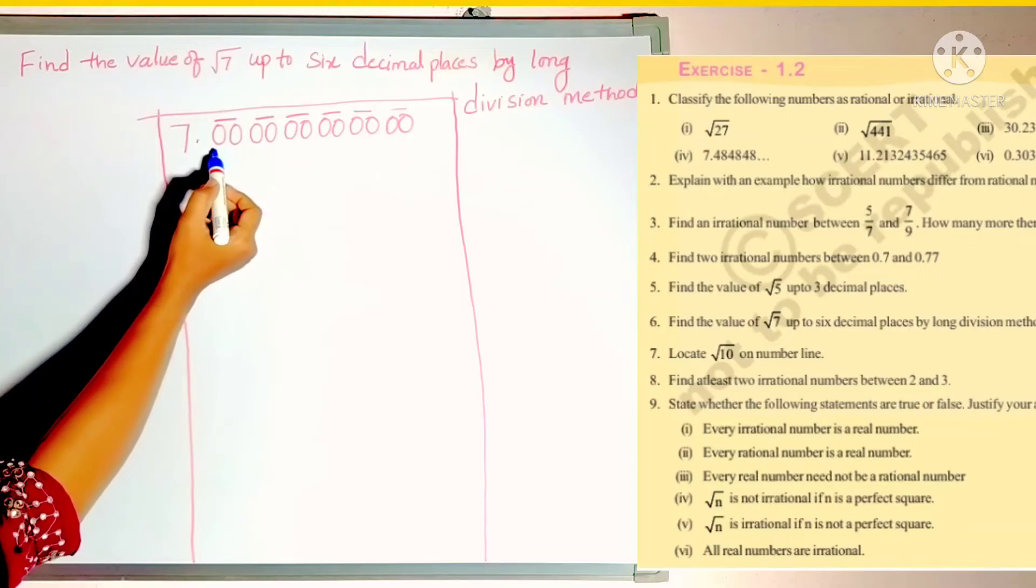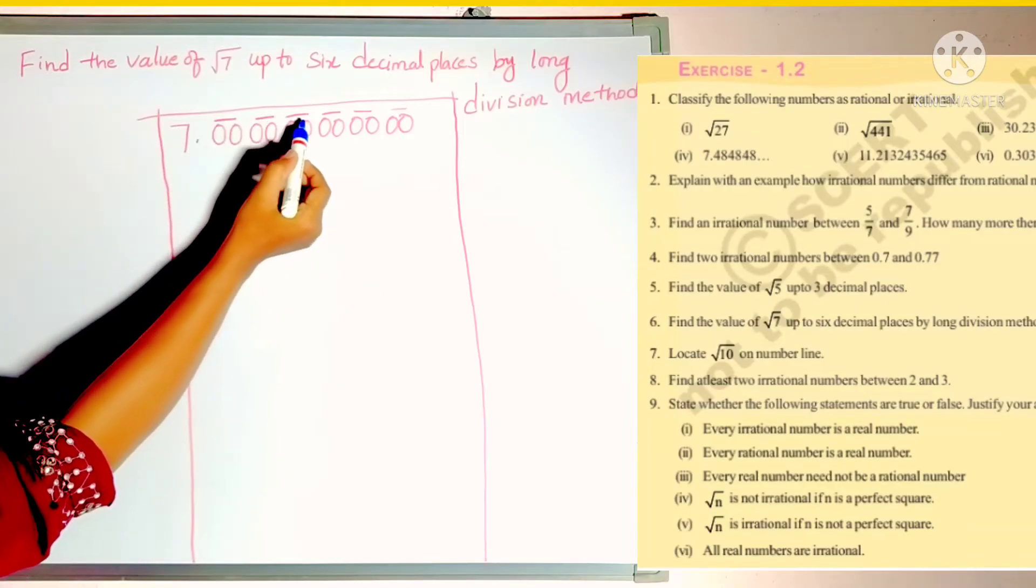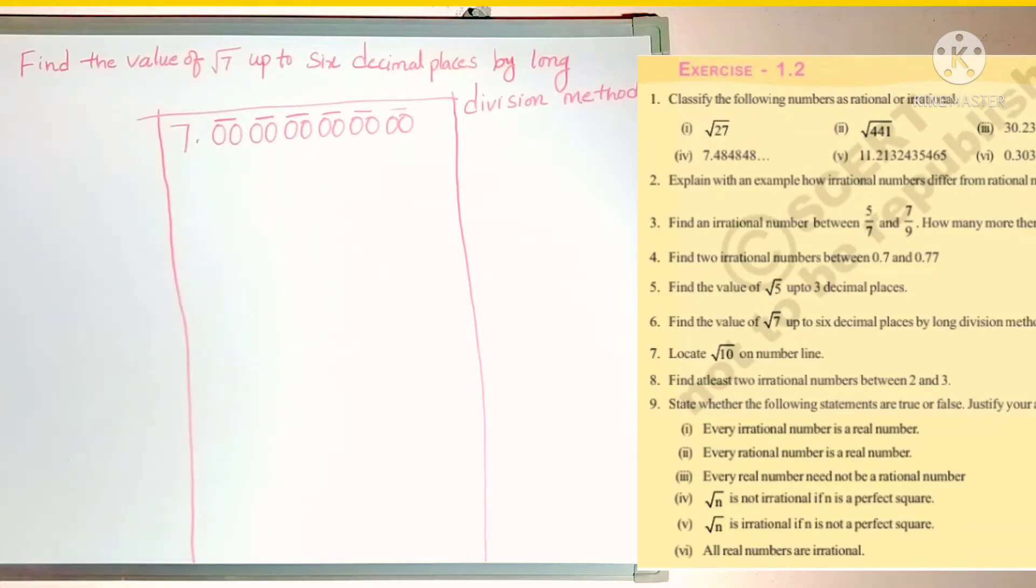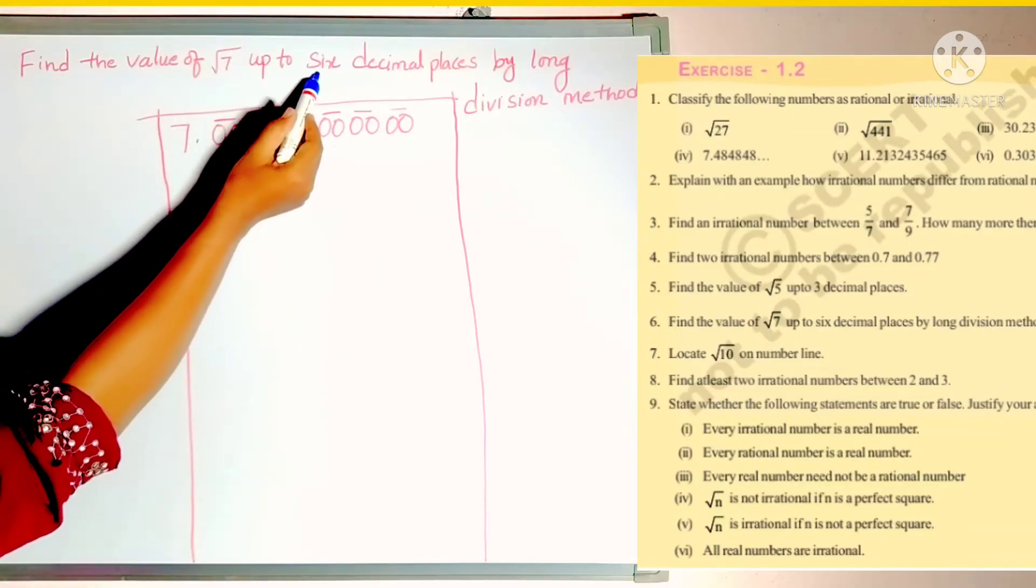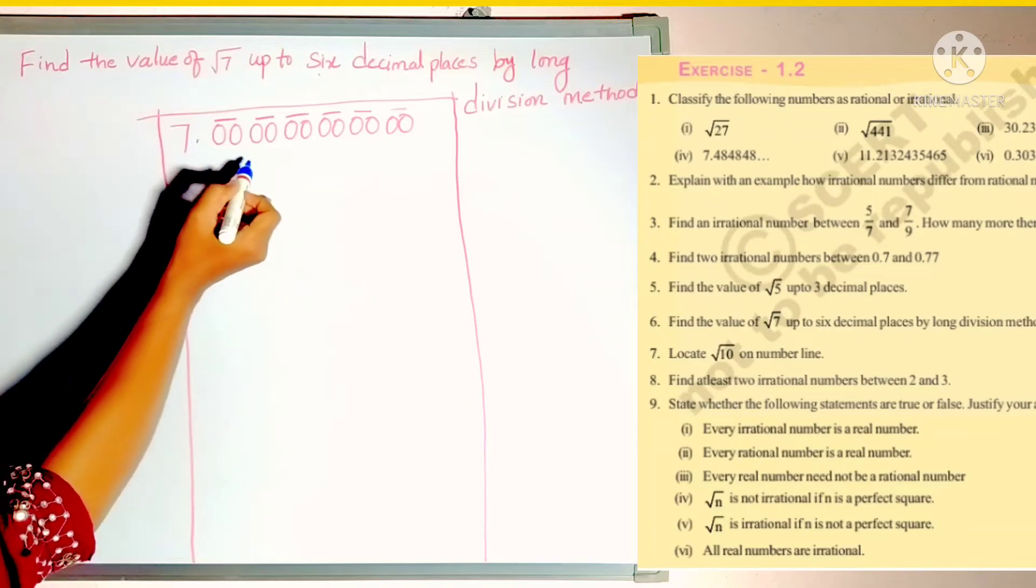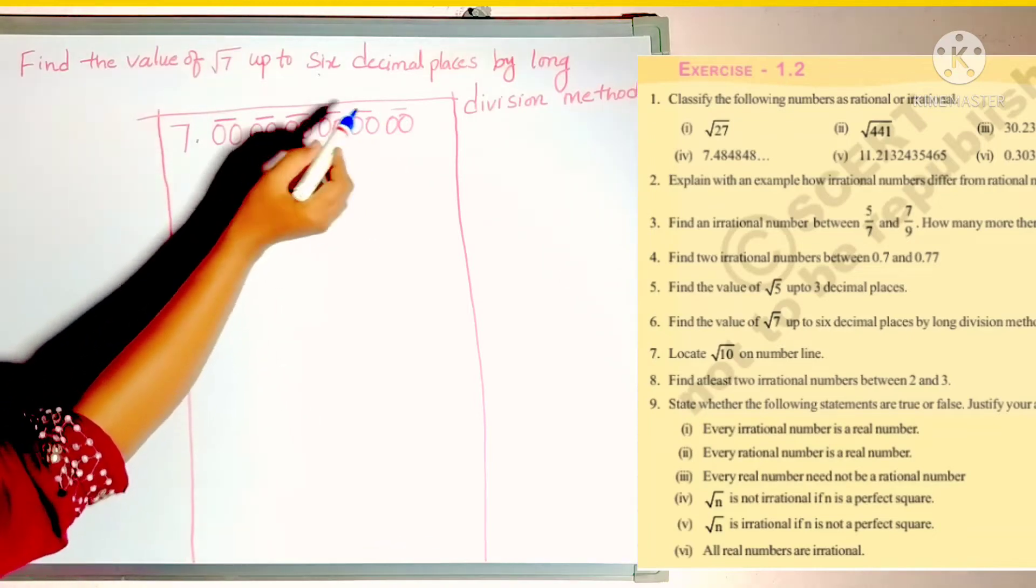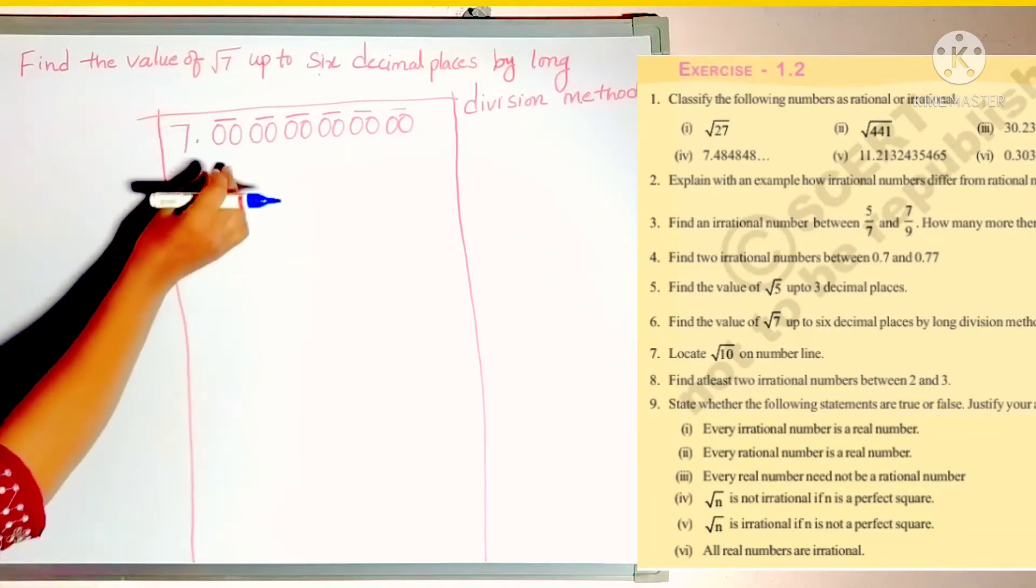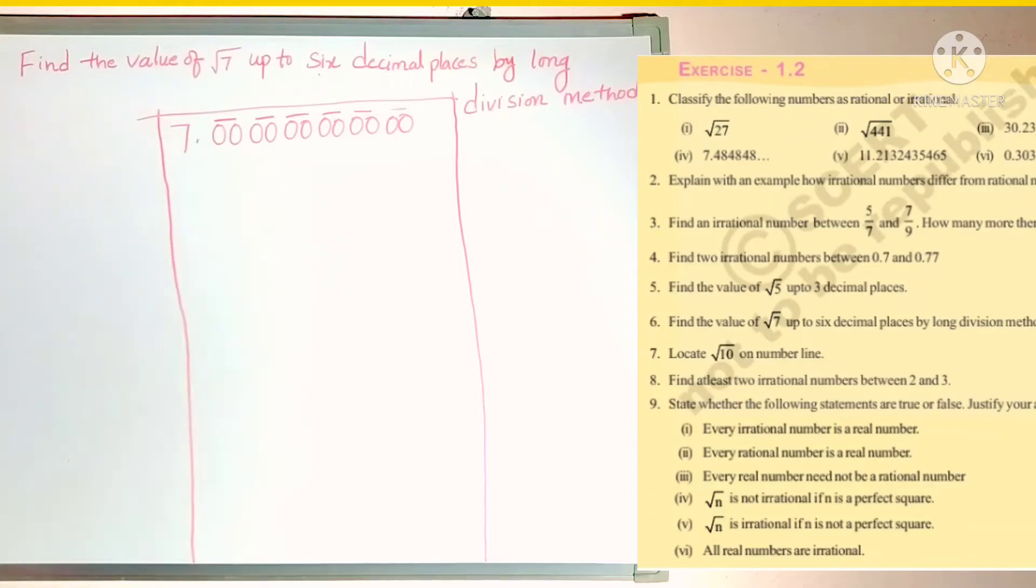That means 2 zeros as one pair and put a bar on each pair. They asked to find out up to 6 decimals, so we wrote 6 pair of zeros and we put bar on them. That means this is one set. Every time we can bring down one set of zeros. So to find out the square root value we use square table only.